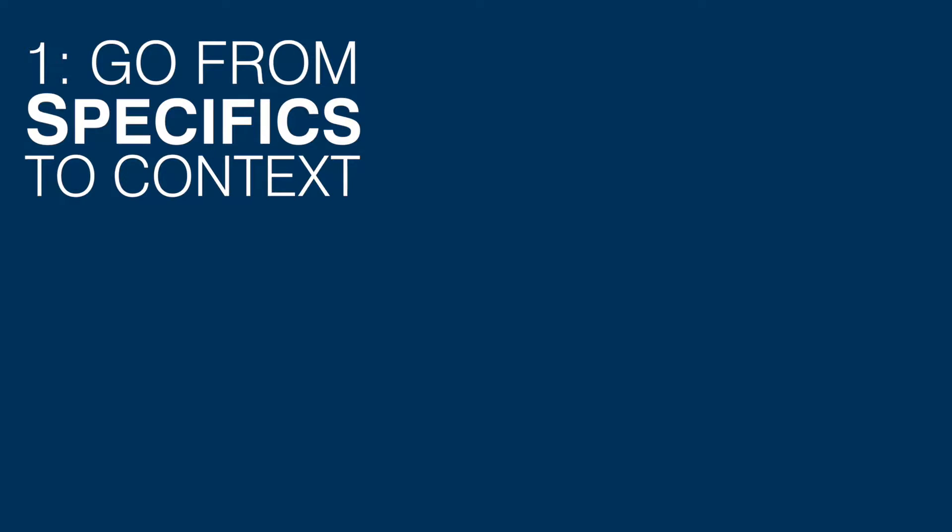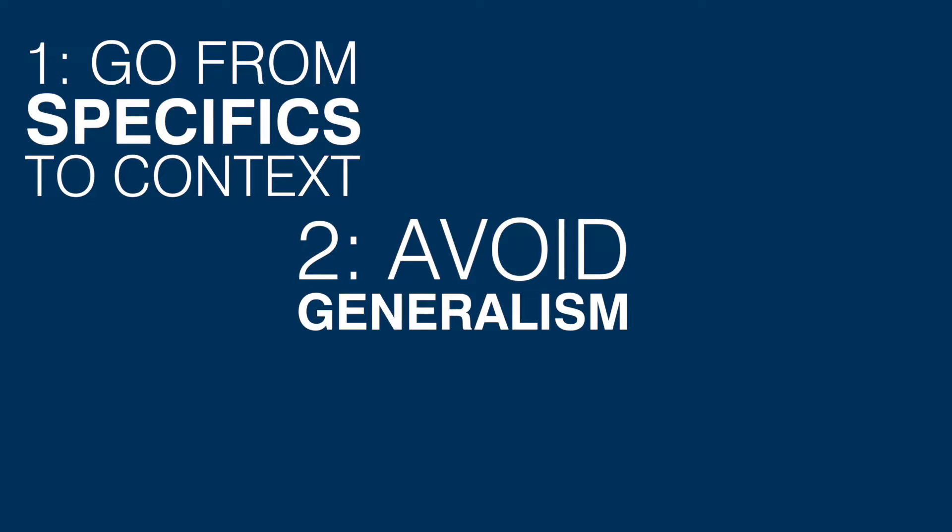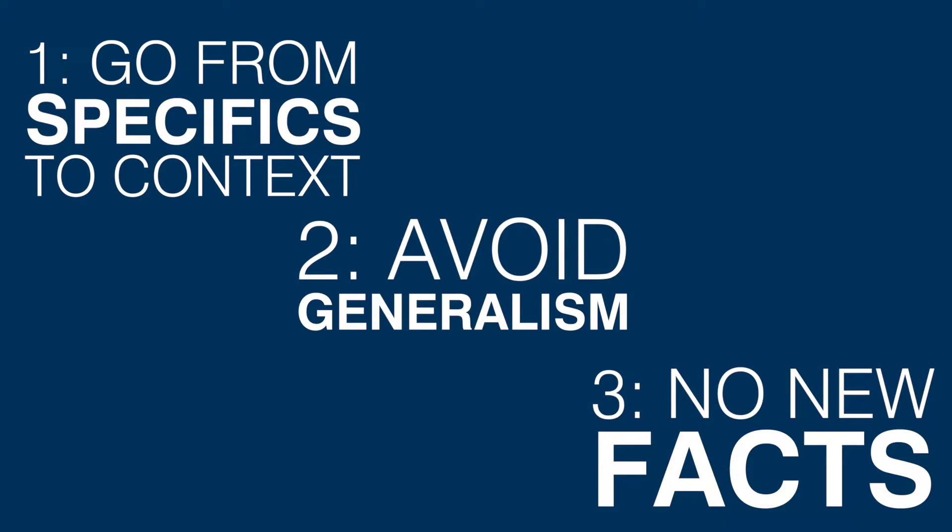So the three themes from this video are: first, progress from the details of your essay back to the context for it. Secondly, avoid being overly vague or overly general, because it undermines the scientific rigour you went to if you say things that you can't support. And thirdly, balance the need for context with the need not to confuse your reader with too many new facts that they're not in a position to expect.